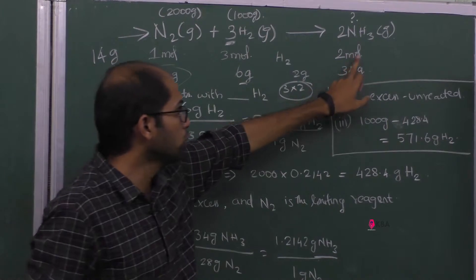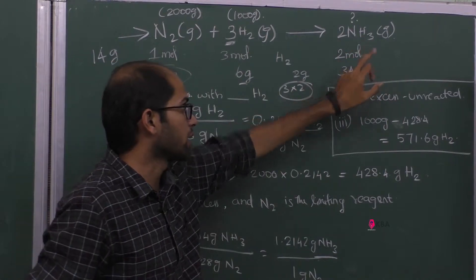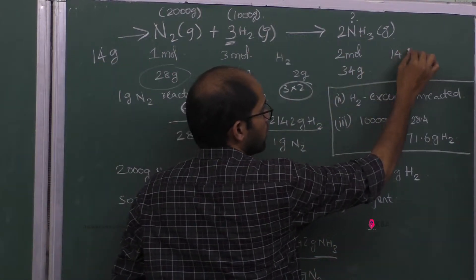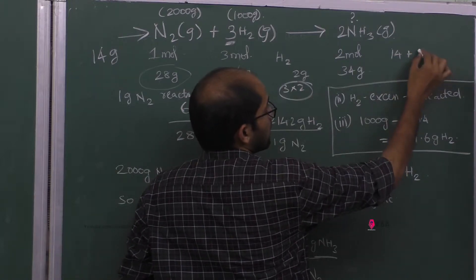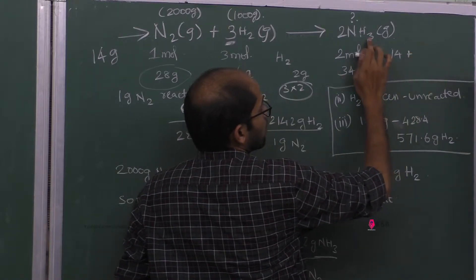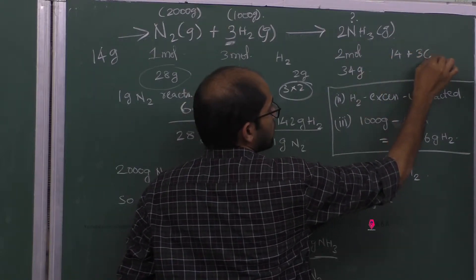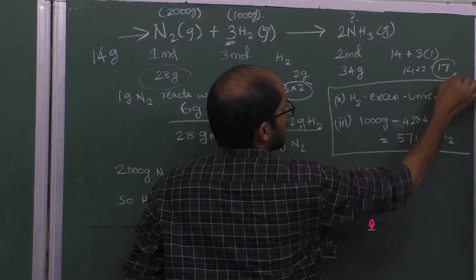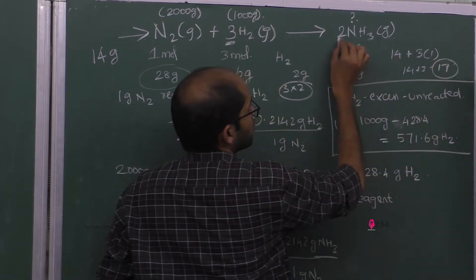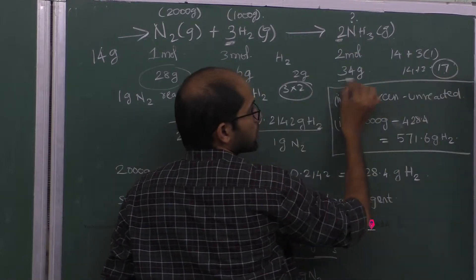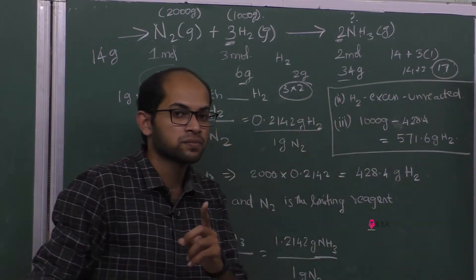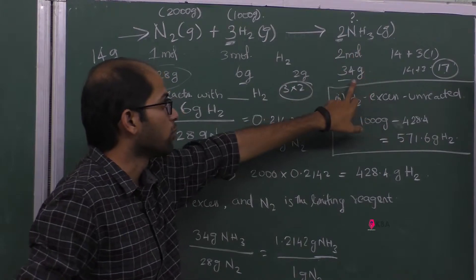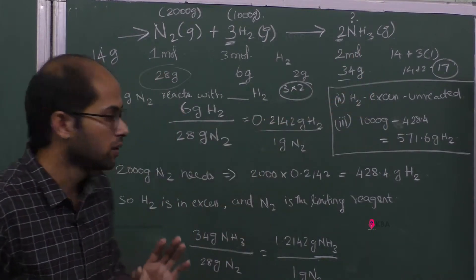For ammonia: there are 2 moles produced. Nitrogen atomic mass is 14, and hydrogen atoms in NH3 is 3 × 1. So 14 + 3 = 17 grams per mole. There are 2 moles, so 2 × 17 = 34 grams. So 2 moles of ammonia have a mass of 34 grams.